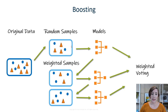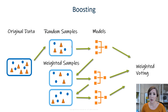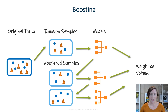In Adaboost specifically, the model will look at how well each sub-model is performing. If they're not doing well at all, it might just drop them — it will train them, test them, and drop them. But if they're doing well enough, they get included in the weighted voting portion.